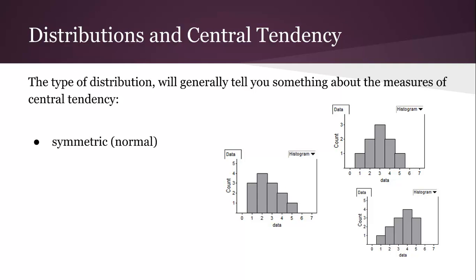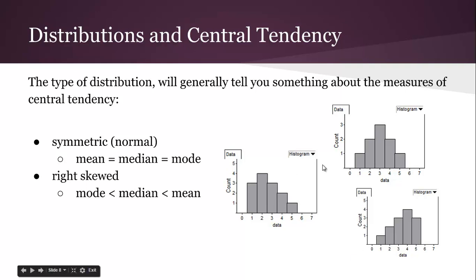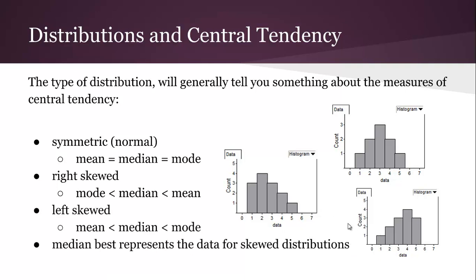Symmetric or normal distribution means that the mean is equal to the median is equal to the mode. Right skewed, the mean is to the right, so in an example like this the mean is actually pulled to the right. And in left skewed, the mean is pulled to the left. If you have a skewed distribution, the median better represents the data.